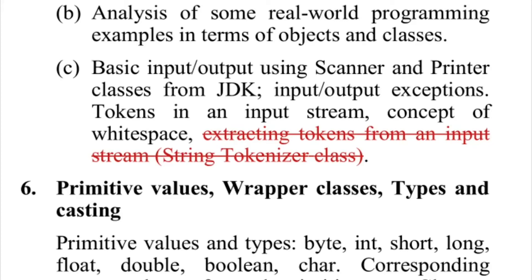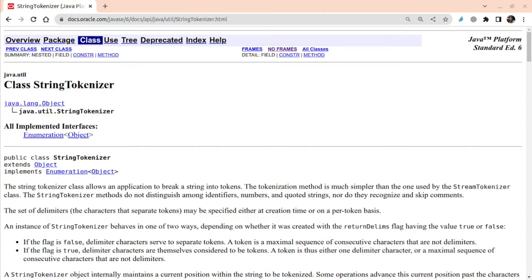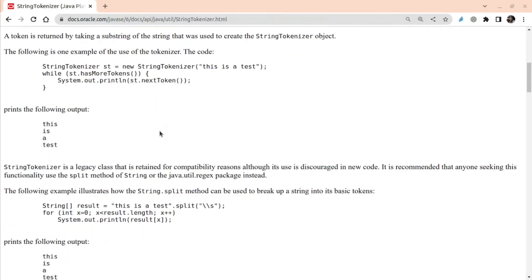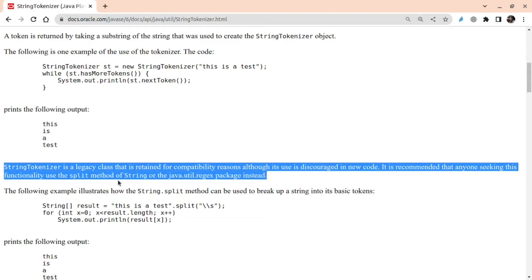The next change is in section B, and here the StringTokenizer class has been removed. This particular change in my opinion has been long overdue as Java documentation has declared it as a legacy class since Java 6. Note that the current stable version of Java is Java 20. This documentation page of the class StringTokenizer from Java 6 clearly says StringTokenizer is a legacy class that is retained for compatibility reasons. Although its use is discouraged in new code, it is recommended that anyone seeking this functionality uses the split method of String or the java.util.regex package instead.